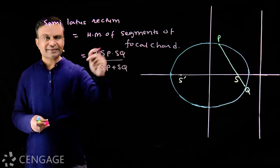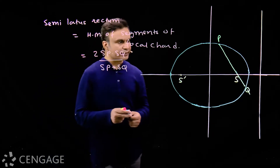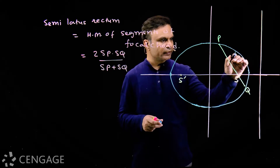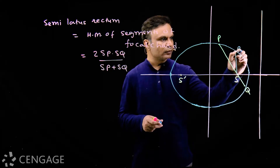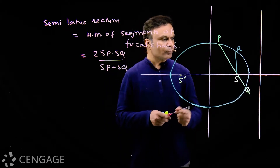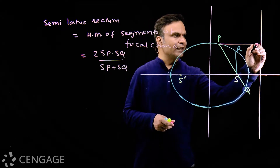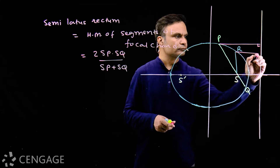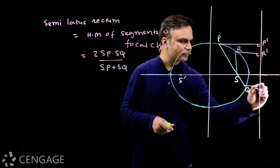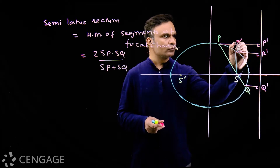The harmonic mean of SP and SQ is given by that formula. Let us prove this result. For the semi latus rectum, I draw the latus rectum — a line through focus S meeting the ellipse at point R above the major axis. From points P, Q, and R, drop perpendiculars on the directrix. Suppose this perpendicular foot from P is point P', from R is point R', and from Q is point Q'.